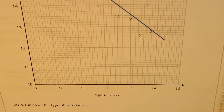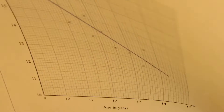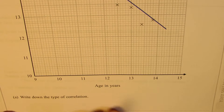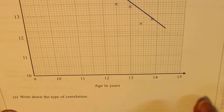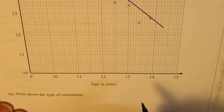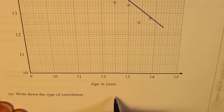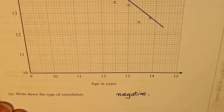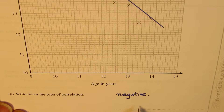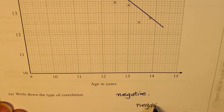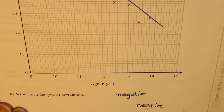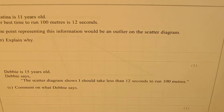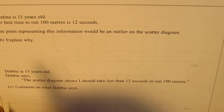The very first question asks us to write down the type of correlation. The type of correlation is negative, since the slope is negative. We can write this as 'negative correlation' — the line is coming downwards, that's the whole idea.